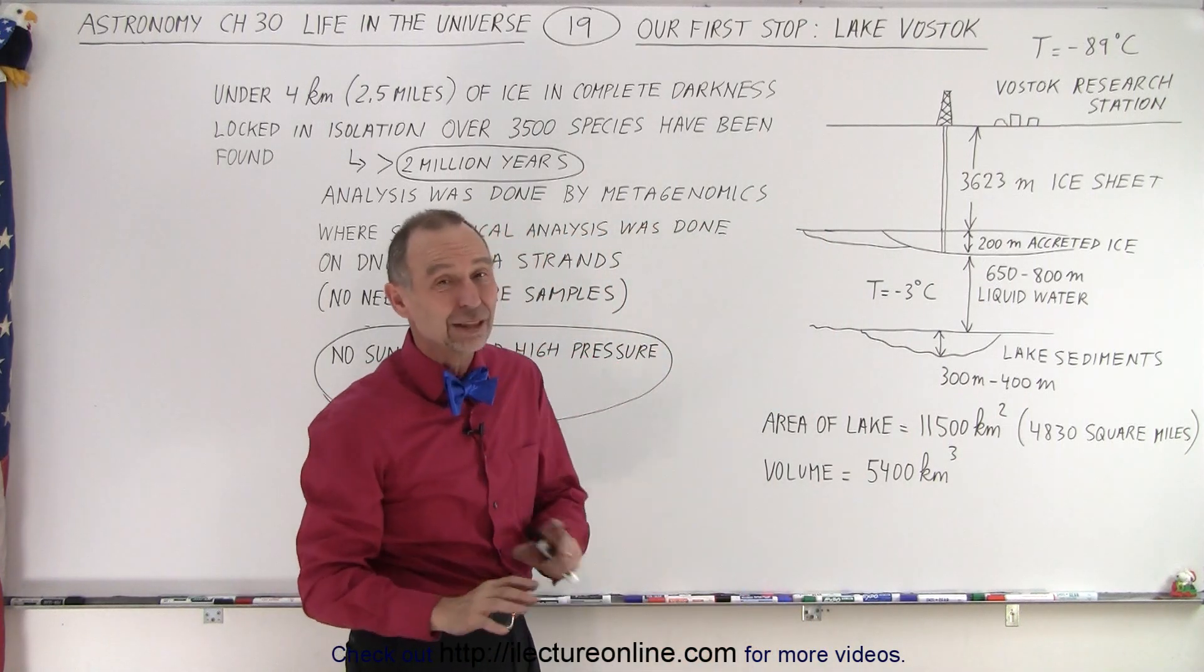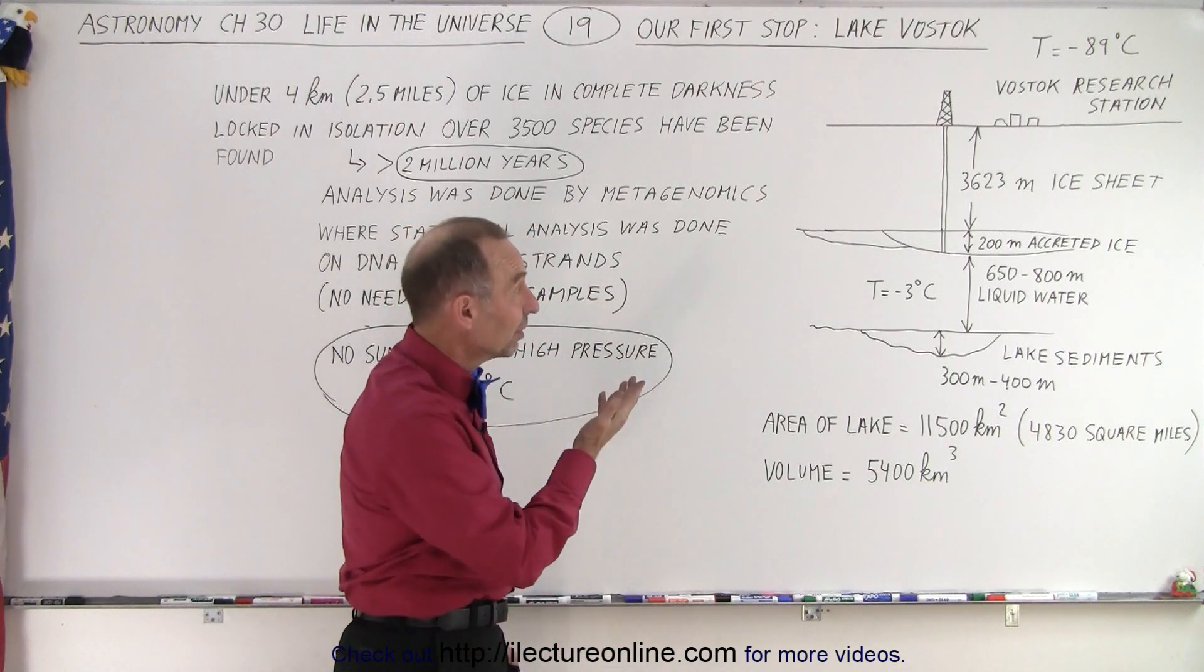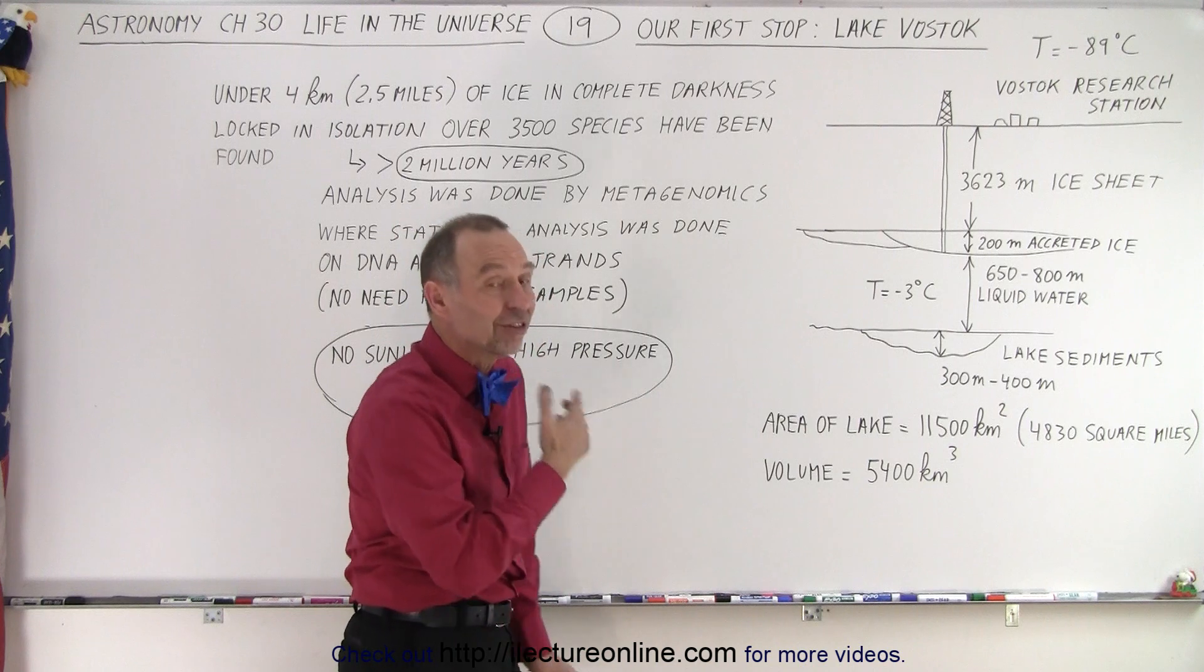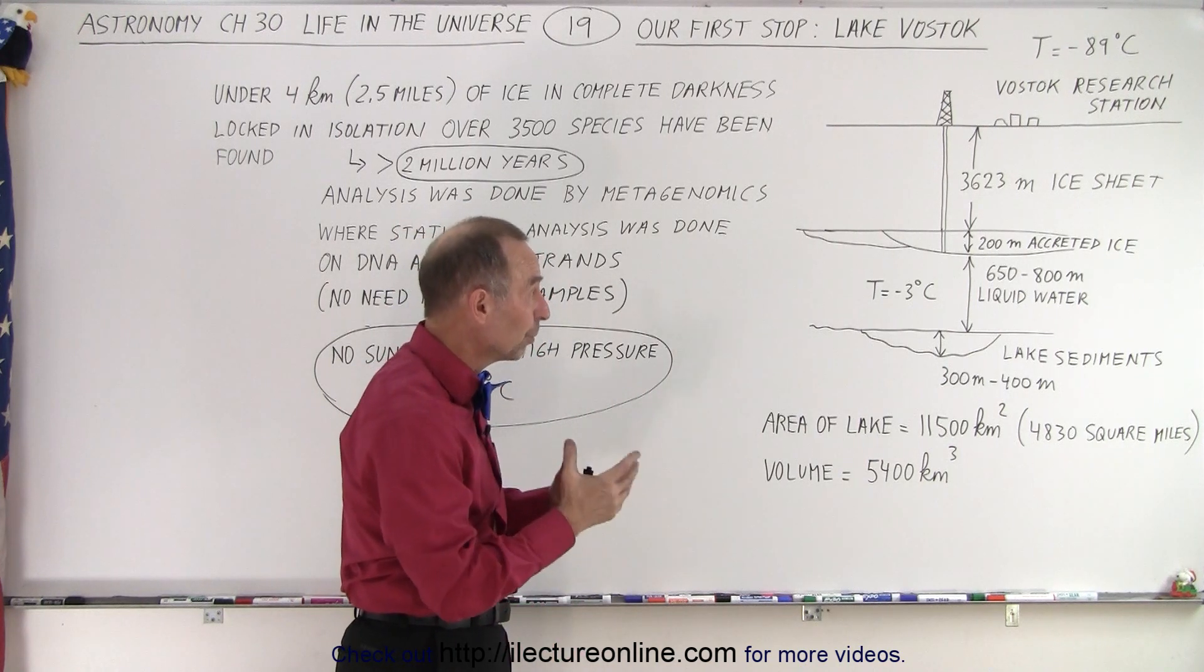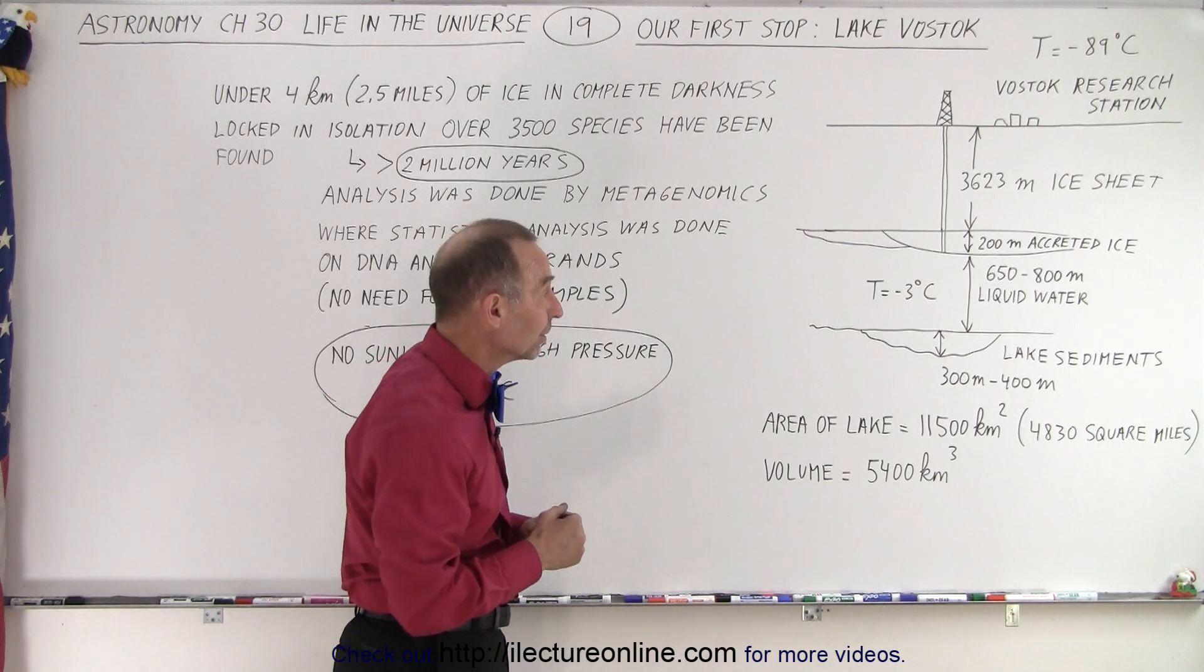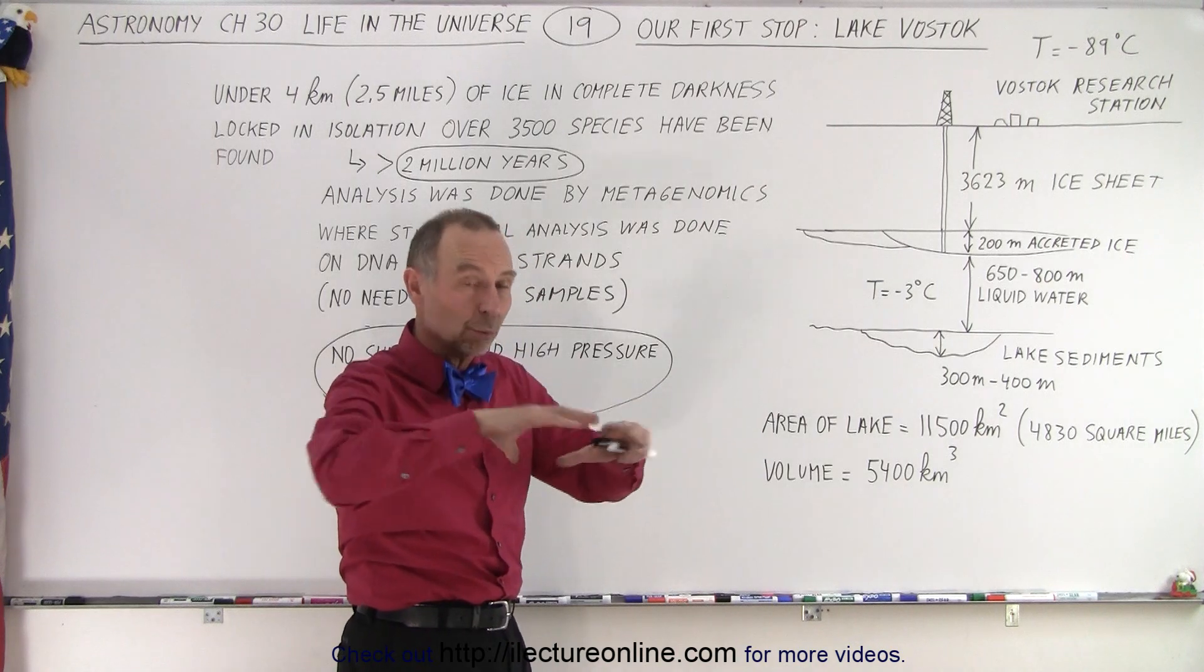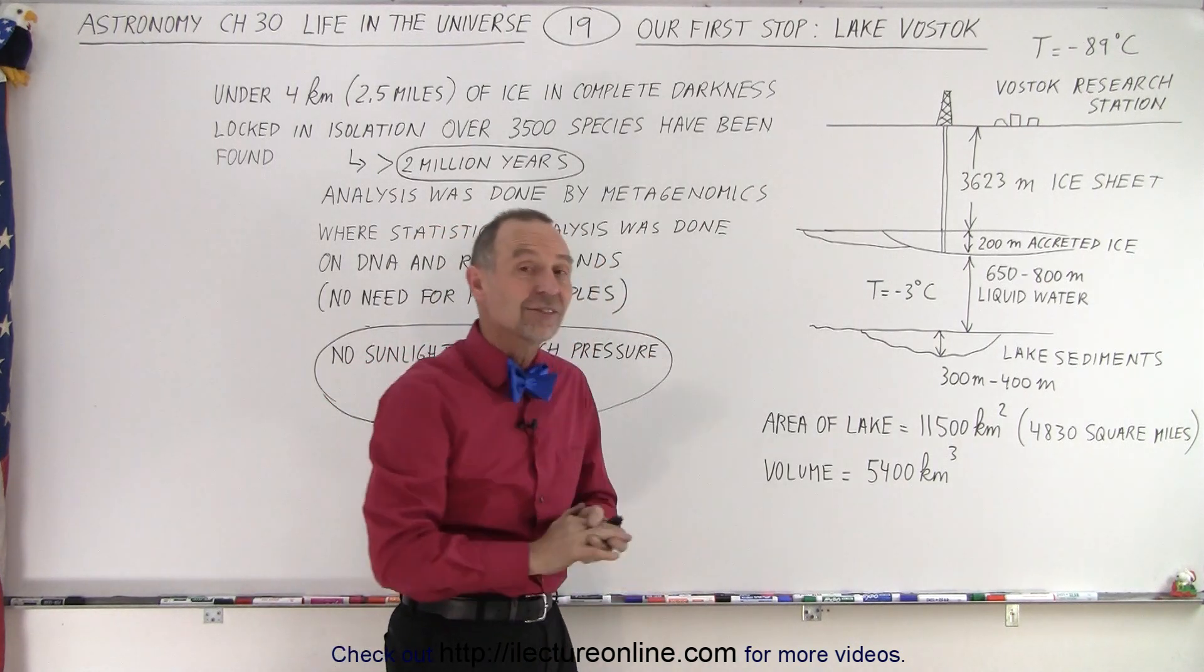You would think that no life could possibly exist in a place like that. Those conditions are probably very similar to what we would find on the moon Europa around Jupiter and potentially also around the moon Enceladus around Saturn. We know that there's vast oceans of liquid water underneath some very thick ice sheets, and so the conditions are probably very similar.